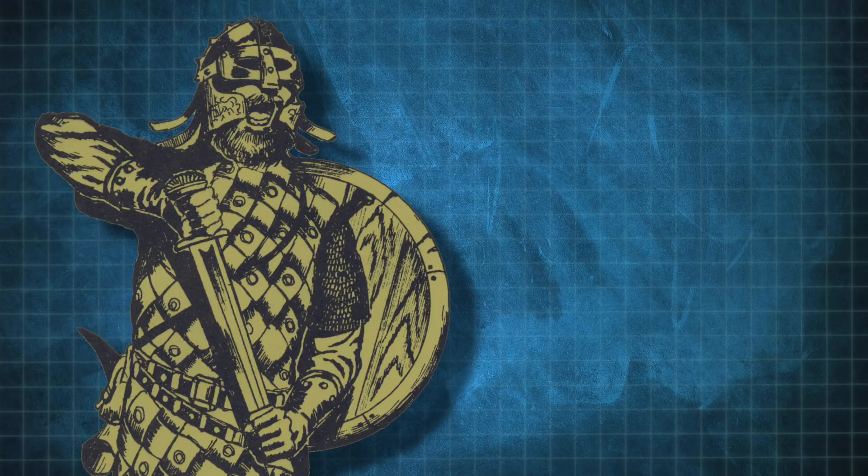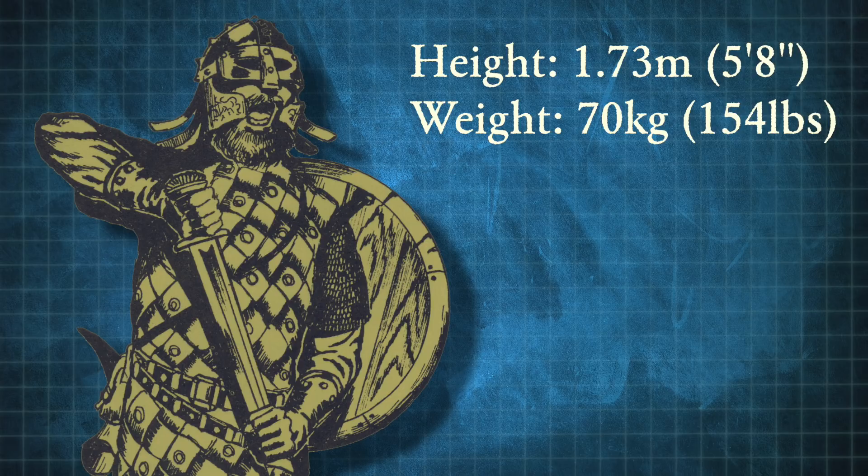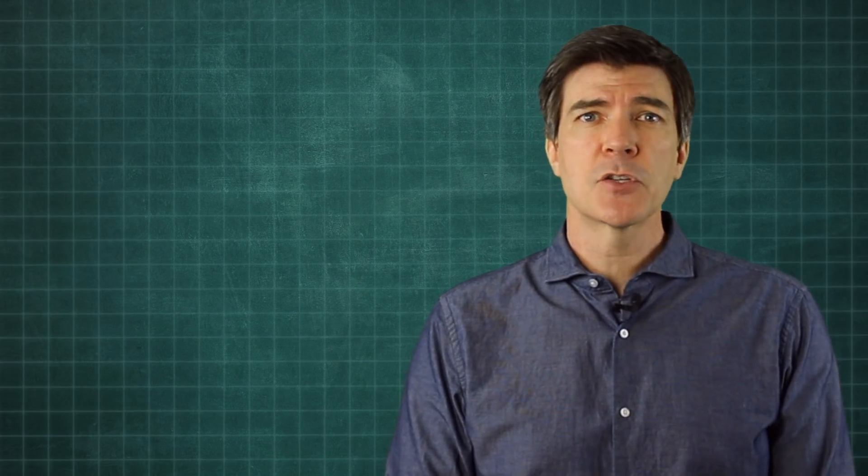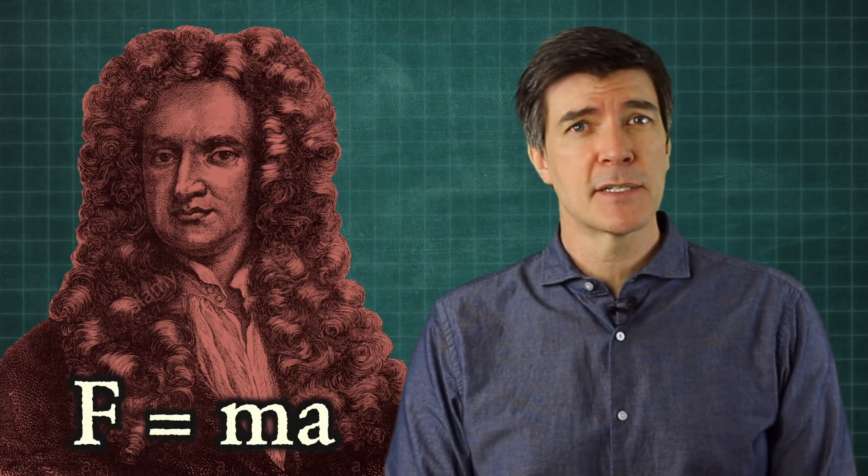We'll start with the example of a fighter who is of average size and swinging a Viking sword. If we consider the fighter's strength score as representing the muscle force he can generate, that brings us right away to Newton's second law, or force equals mass times acceleration.